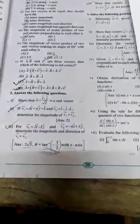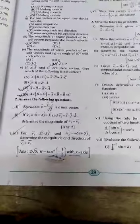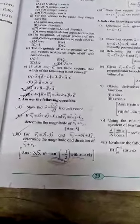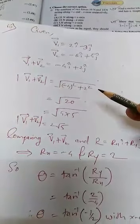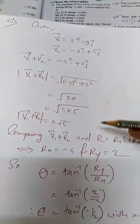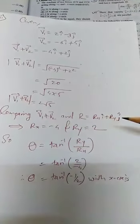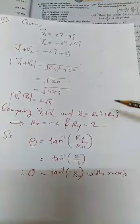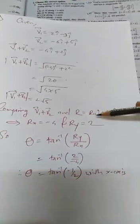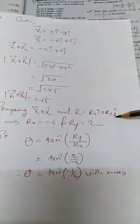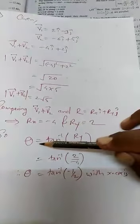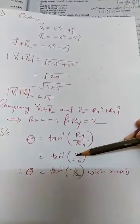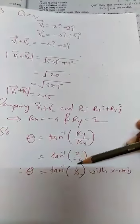Question number 3: v1 = 2i-cap minus 3j-cap and v2 = -6i-cap + 5j-cap. Determine the magnitude and direction of v1 plus v2. The magnitude of v1 + v2 is root 5. Comparing with r = rx·i-cap + ry·j-cap, rx = -4 and ry = 2. Theta equals tan-inverse(ry/rx) = tan-inverse(2/-4) = tan-inverse(-1/2) with the x-axis.